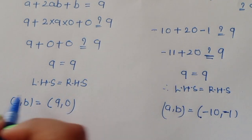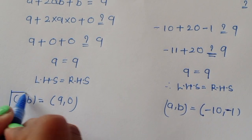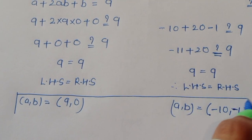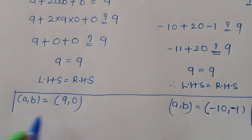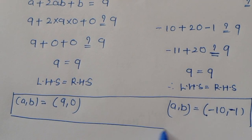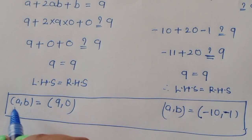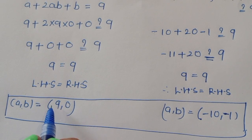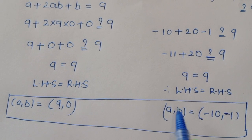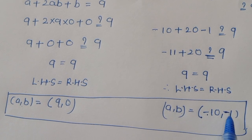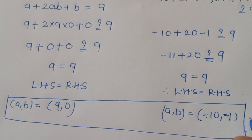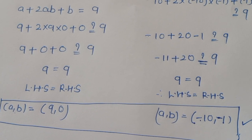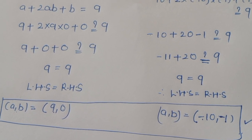We got two values of (a, b): the first solution is a equals 9 and b equals 0, and the second solution is a equals minus 10 and b equals minus 1. These are the two solutions. Thank you.